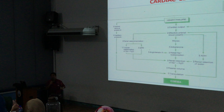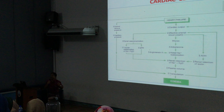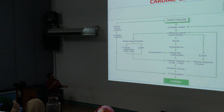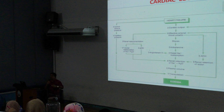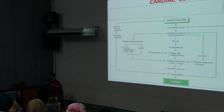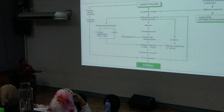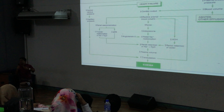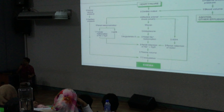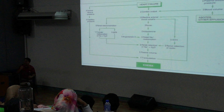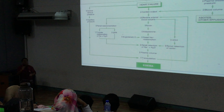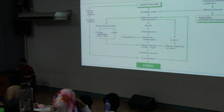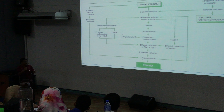Effective arterial blood volume is reduced because less blood is being put out by the heart. When there is reduction in cardiac output, less blood flows through the kidneys. This automatically triggers the renin-angiotensin-aldosterone axis — which is normal physiology — and that leads to retention of sodium and water, causing edema.